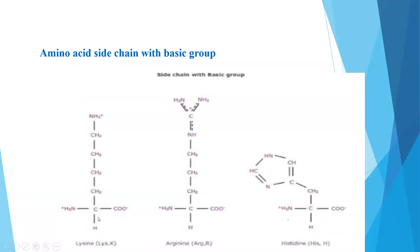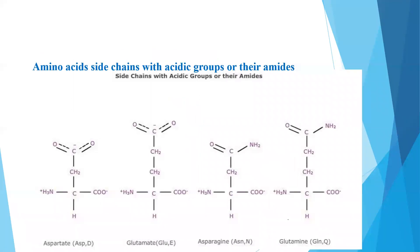Tyrosine and histidine also contain aromatic rings. Next comes amino acid side chains with basic groups — lysine contains an extra amino group (NH3) in addition to the basic functional group, arginine also contains an extra basic group, and histidine contains an NH group. All three — lysine, arginine, and histidine — come under the basic group of amino acids. For amino acids with acidic groups or their amides, aspartic acid and glutamic acid contain acidic groups, while asparagine and glutamine contain amide groups.